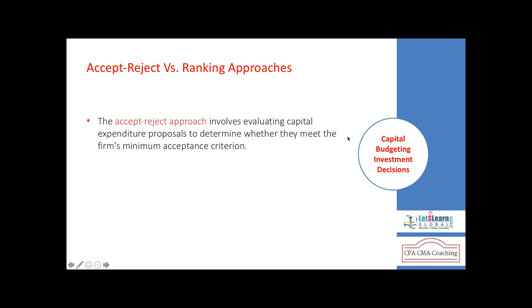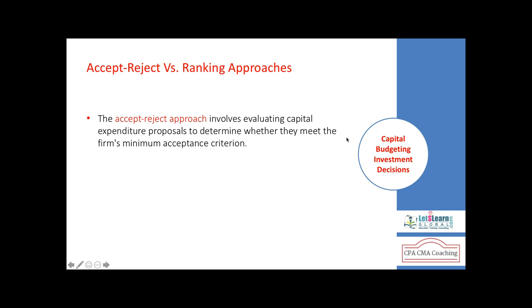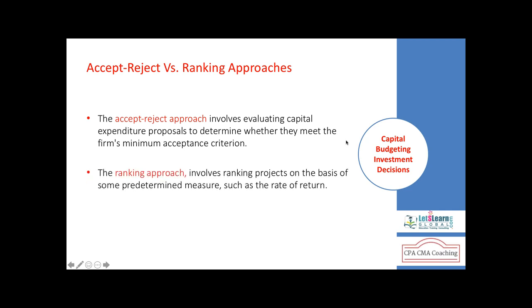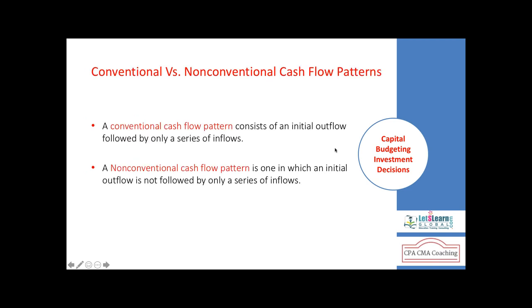Question: which is an accurate example of a mutually exclusive project? If a manager can choose to invest in both project A and B at the same time, they are independent projects. If a manager can choose between investing in either A or B but not both — that is mutually exclusive. If a manager invests in A first then B shortly after, they are still independent because both are accepted. The correct answer is: a manager can choose either A or B but not both.